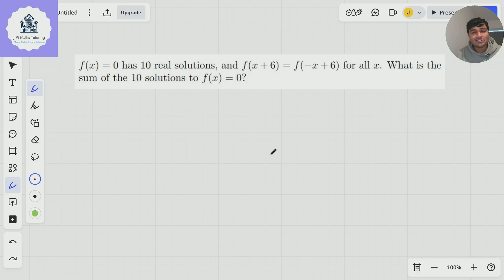f of x equals 0 has 10 real solutions, and f of x plus 6 equals f of minus x plus 6 for all x. What is the sum of the 10 solutions to f of x equals 0?